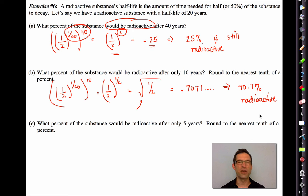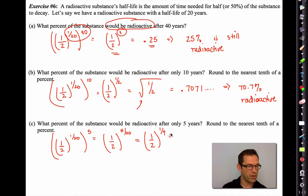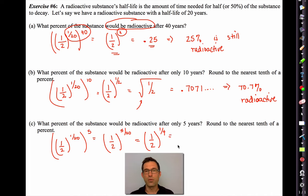Finally, what percent of the substance would be radioactive after only five years? So after only five years, most of it is going to be radioactive. We've barely had any time. One-half to the one-twentieth raised to the fifth will be one-half to the five-twentieth, which you could definitely just put in that way. Or you could have one-half to the fourth. And that would be 0.84089, etc. And that would be about 84.1%.